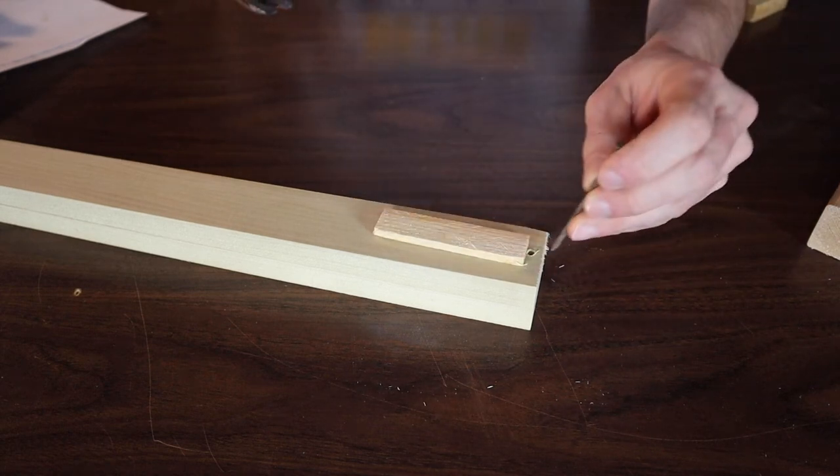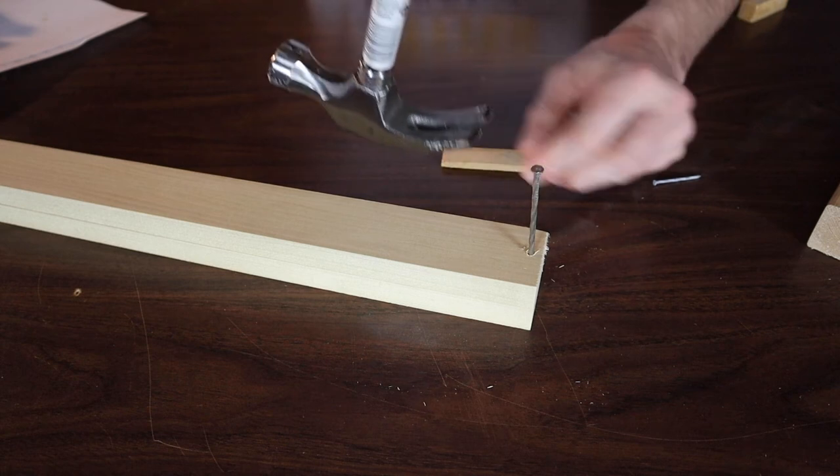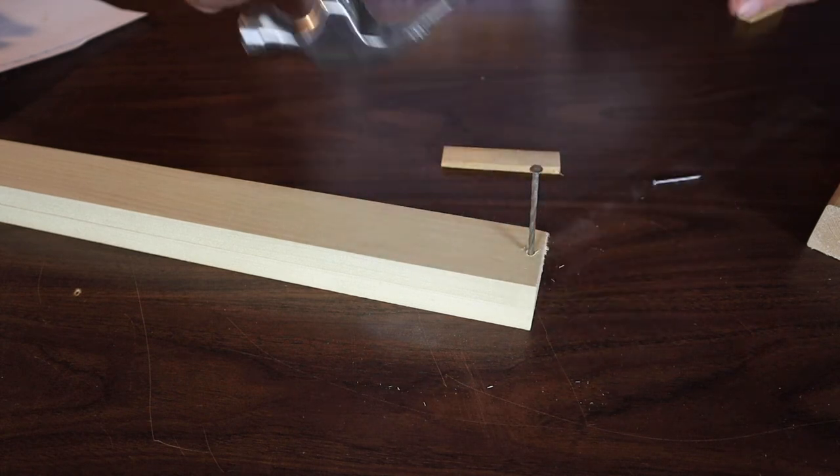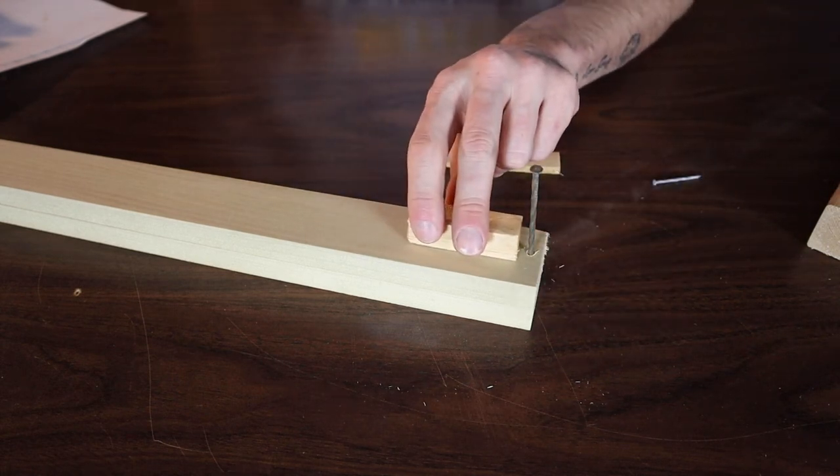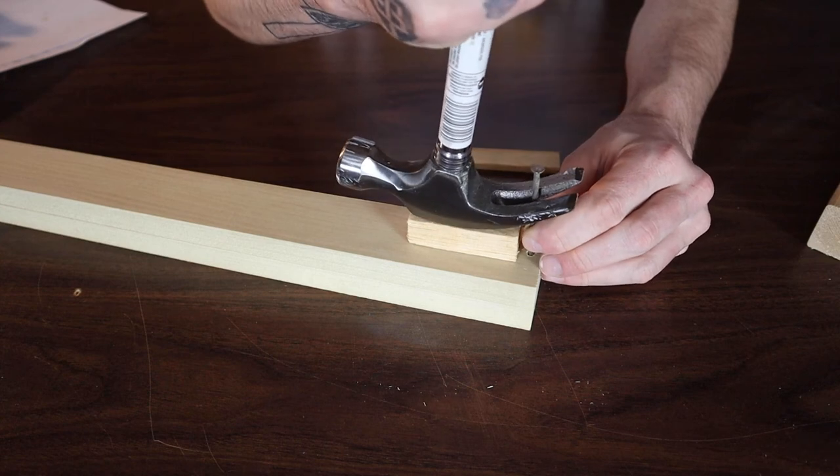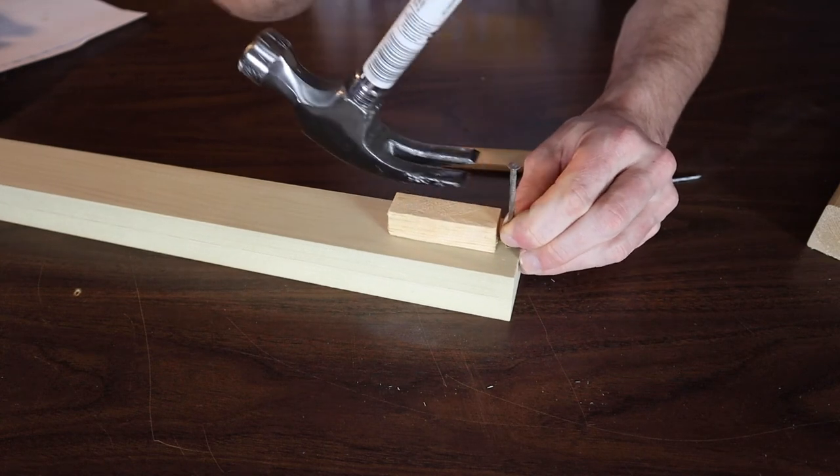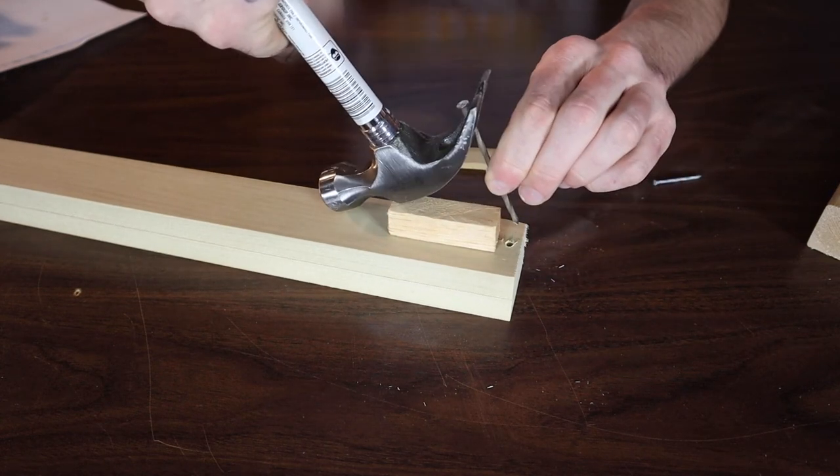If you happen to have a longer nail and you can't get the leverage with the hammer to pull it out, you could get a taller piece of wood, put it under the nail, and that's going to give you the leverage you need to pull that nail out.